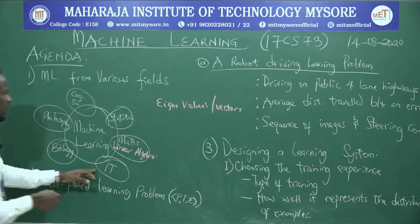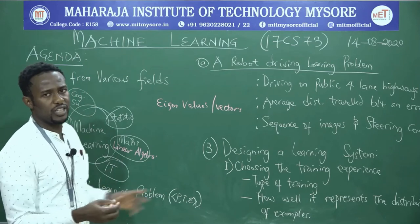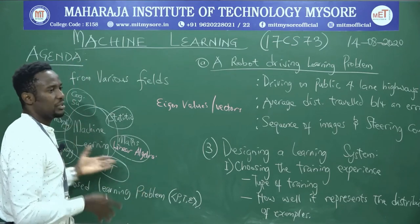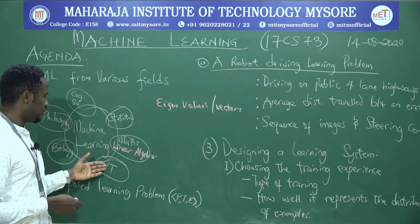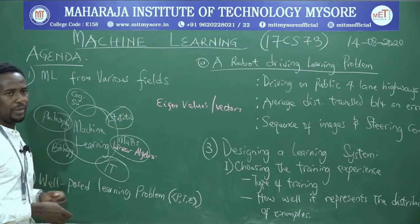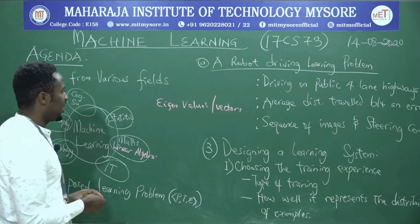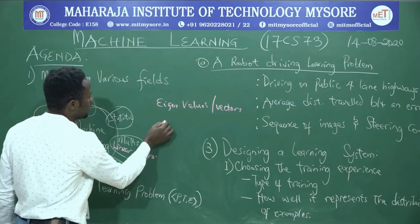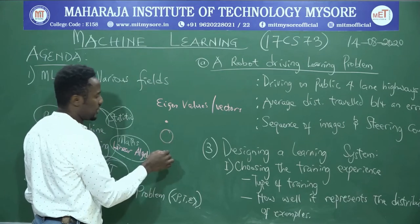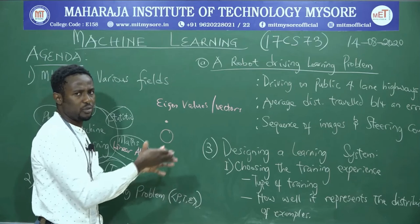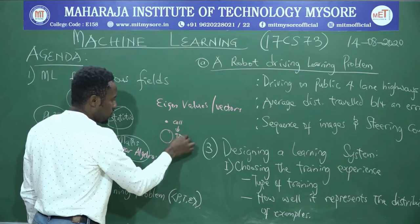Information technology is everywhere, and the proliferation of data has made machine learning more of a buzzword. There is an overlap between information technology and machine learning. When we look at biology, we're not talking about cells or the organization of life from cell to tissue to organ systems.